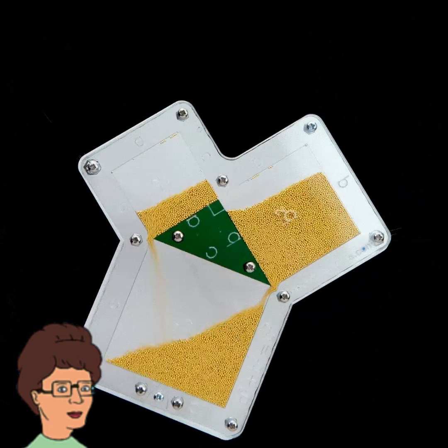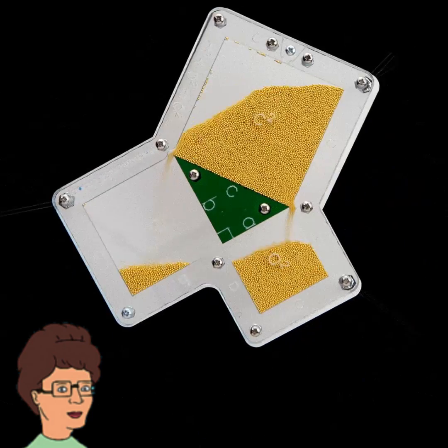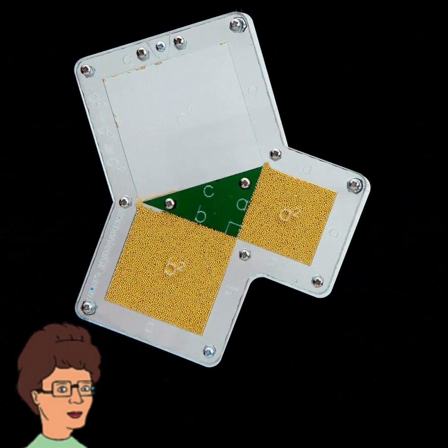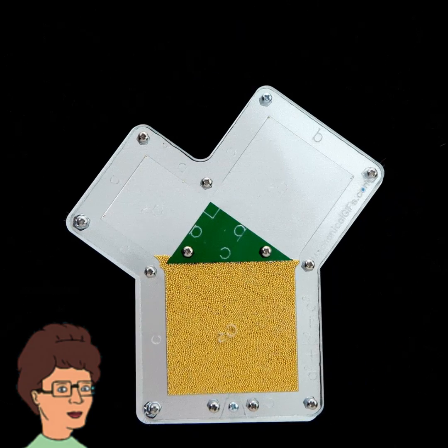There are just enough beads to fill the largest square, and due to the Pythagorean Theorem, this same number of beads is also precisely the right amount to fill the two smaller squares. By tilting the model in different directions, you can witness this equivalence in action.